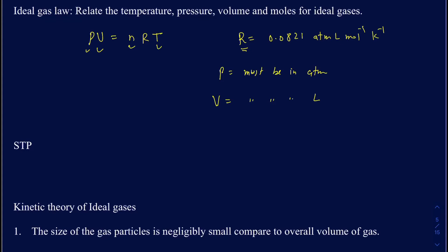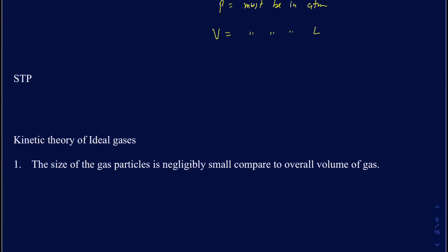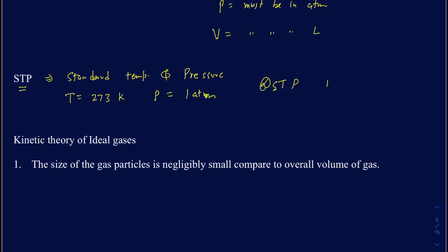I want to talk about what STP is. STP stands for standard temperature and pressure. For gases, the standard temperature is 273 Kelvin, and the standard pressure is 1 atm. Make sure you are aware of these conditions.